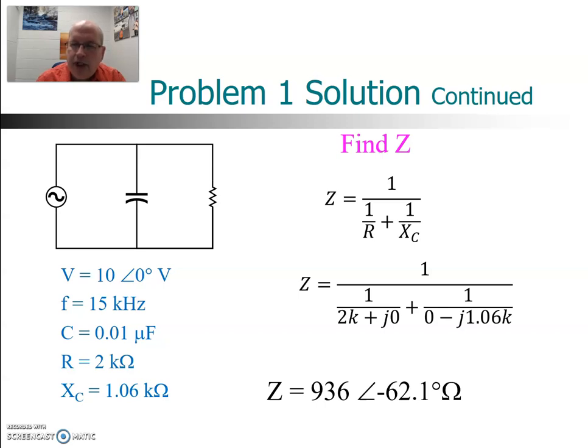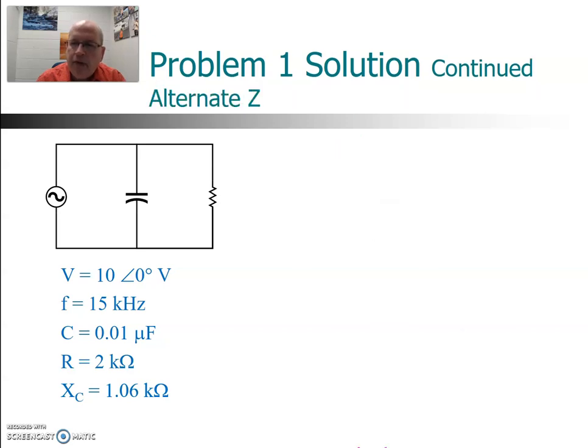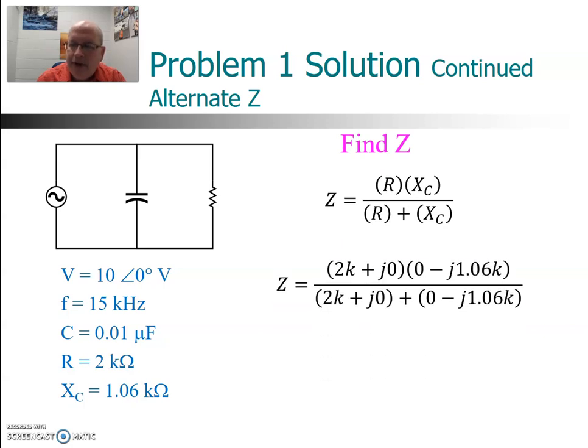Remember with two parallel branches when we have two resistors we did product over sum. Well it turns out we can do the same thing with Z's. We can do product over sum with Z's. And if we do that we would actually get exactly the same number as we did a moment ago, 936 ohms angle minus 62.1. Okay so two different ways to do that, either reciprocal of the sum of the reciprocals or product over sum.